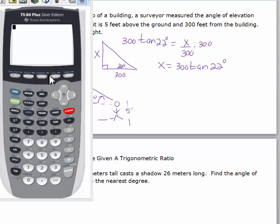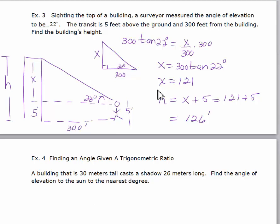I've already checked that my calculator is in degree mode. 300 times the tangent of 22 degrees equals 121.2. I'm going to round the height of this building to the nearest foot. So x is equal to 121. If x equals 121, the height equals x plus 5. So that would be 121 plus 5, and the height of the building is approximately 126 feet.